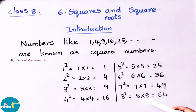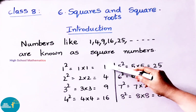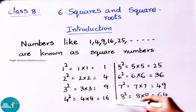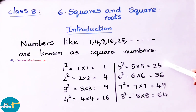8 square means 8 into 8, that is 64. 9 square means 9 into 9, that is 81. 10 square means 10 into 10, that is 100. So 1, 4, 9, 16, 25, 36, 49, 64 and so on — all these numbers are also called as perfect squares.